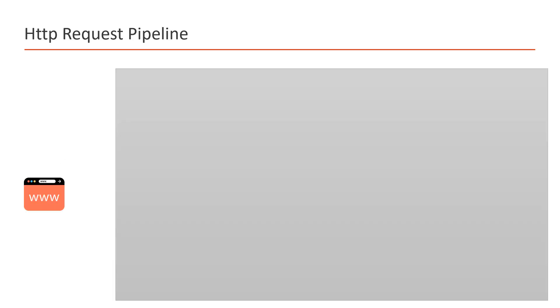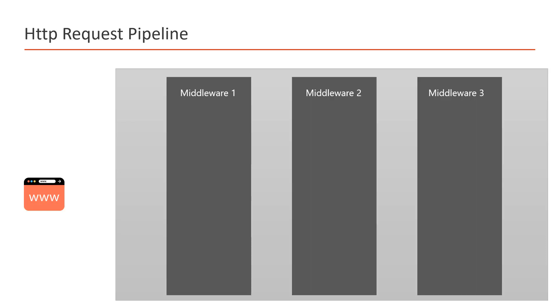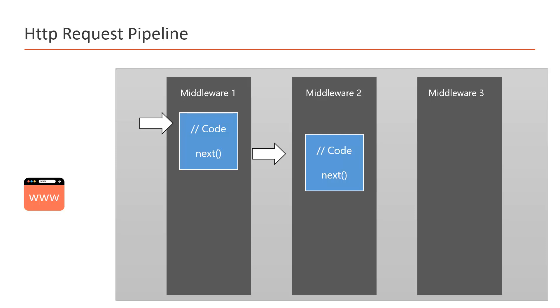Let's understand this pipeline in more detail. An ASP.NET Core request pipeline can have multiple middlewares — think of a middleware as just a block of code. When a request is sent from the browser, it first comes to the first middleware, that code executes, and if there is a next() method it passes execution to the second middleware. That code executes, and if next() is present again, the request travels from middleware 2 to middleware 3.